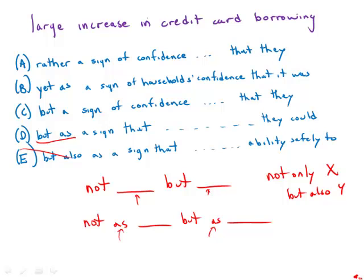I'll also point out that choice A—'a sign of confidence by households'—is really awkward, indirect, and wordy, whereas choice D—'a sign that households were confident'—is completely clear, direct, and concise. So by far that makes D the best answer.